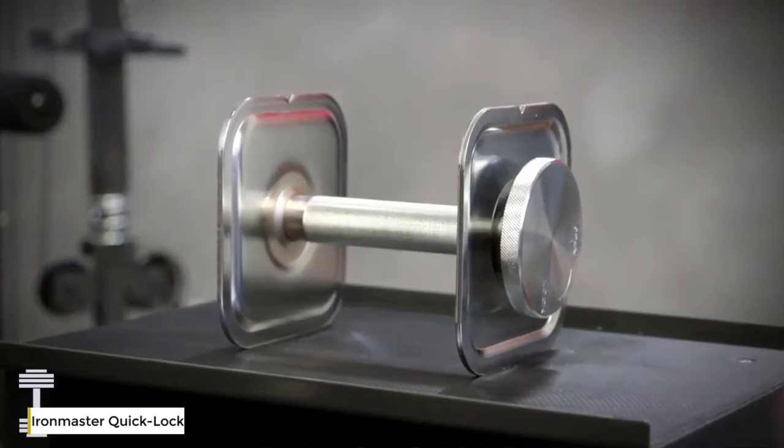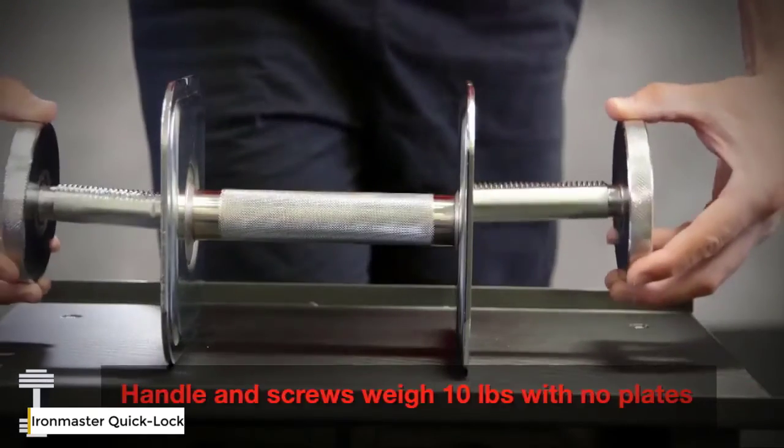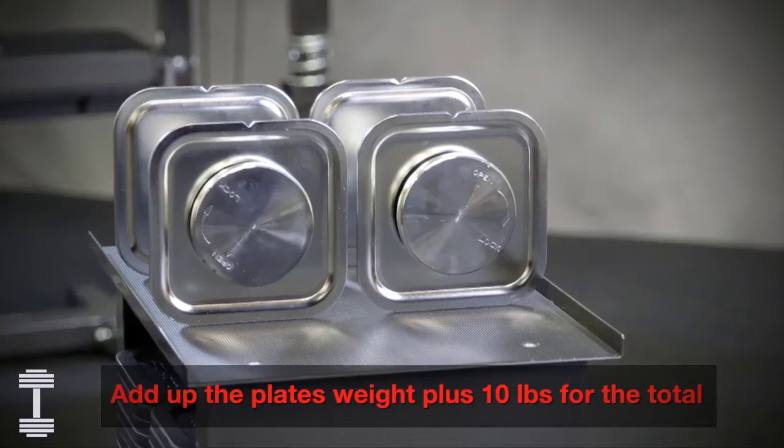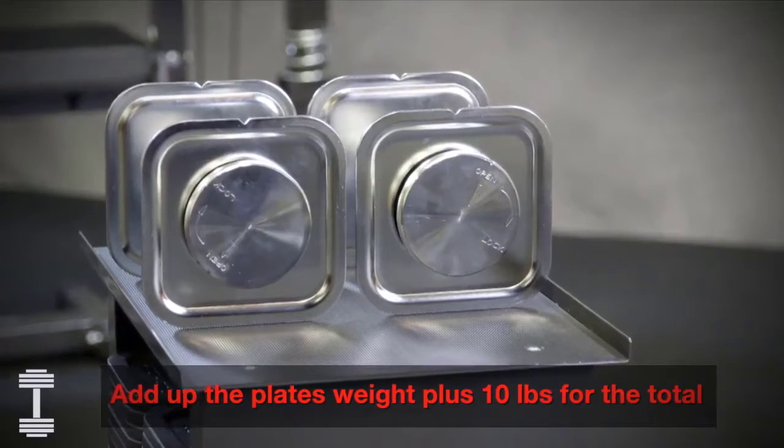The Quick-Lock dumbbell handles have a starting weight of 5 pounds for the empty handle. Each locking screw weighs 2.5 pounds, so the starting weight before you add plates is 10 pounds.